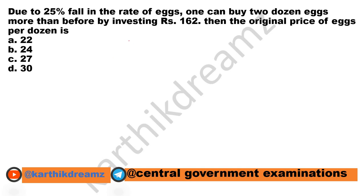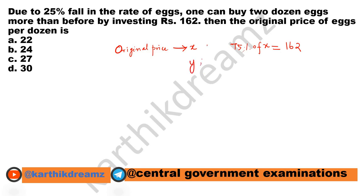Let the original price be X. There is a 25% fall in the rate, which implies the new price is 75% of X. We are purchasing for 162 rupees — if I am buying Y dozen X before, then after the price fall I get Y plus 2 dozen X.